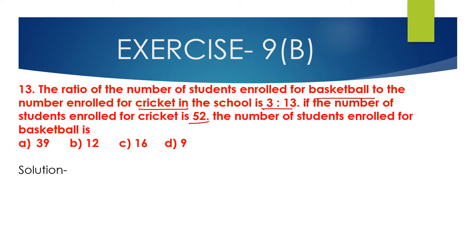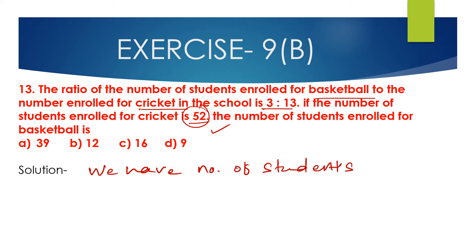It is given that the number of students enrolled for cricket is 52, and the ratio of students enrolled for basketball to cricket is 3 is to 13. Let the number of students enrolled for basketball be 3x and for cricket be 13x.